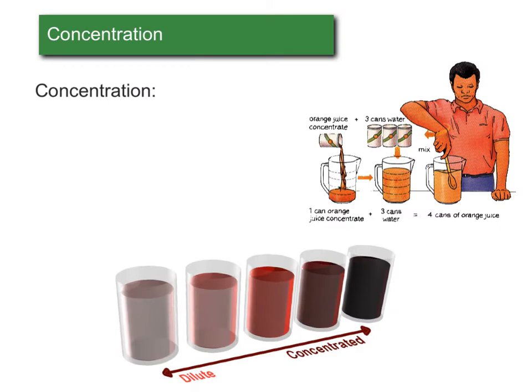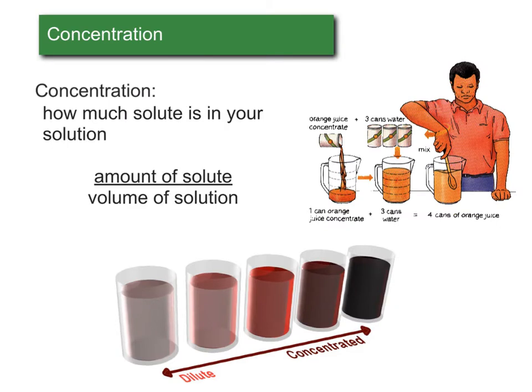Concentration is a measure of how much solute we have per amount of solution. The solute is what we're dissolving, and the solution is what we get after the solute is dissolved in the solvent. That's just a bit of nomenclature you need as we talk about solutions and concentration. So concentration basically tells us how much stuff is in there per volume of the solution.